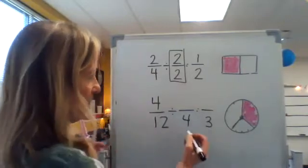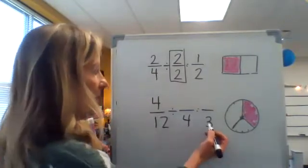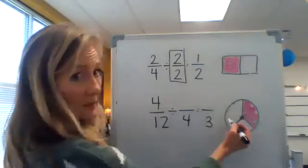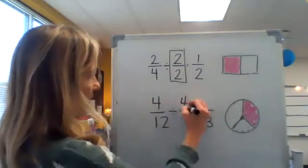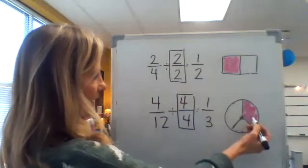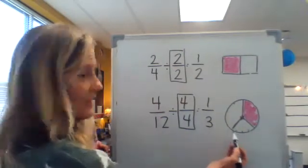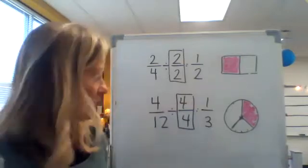And I might have to adjust my model a bit to show that. But I've created an equivalent fraction. Twelfths divided by four is going to create three parts. And then I can't give you the same amount. I have to divide the top number by the same. Four divided by four is one. And I can see that 4/12 is the same as 1/3. And I can see visually that it's the same amount as well.